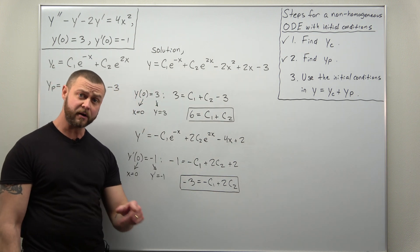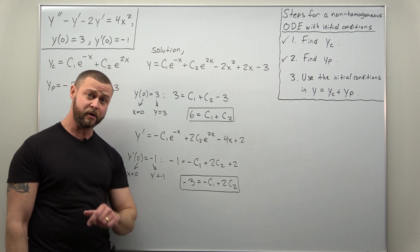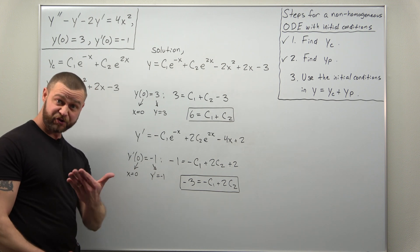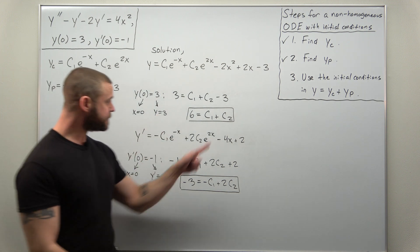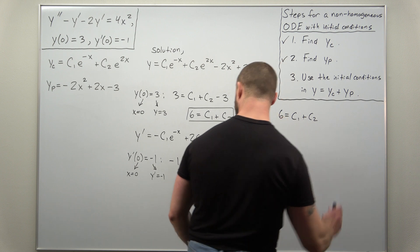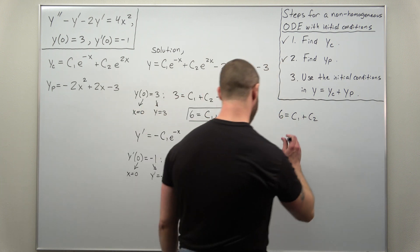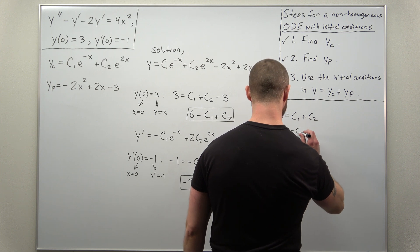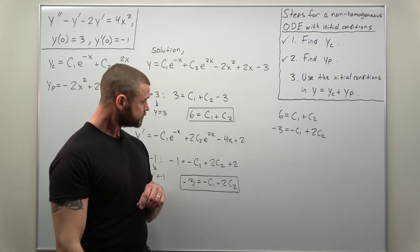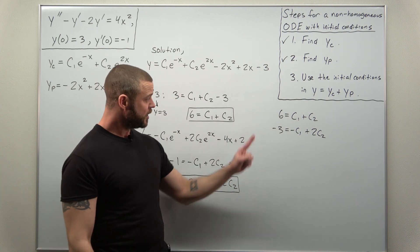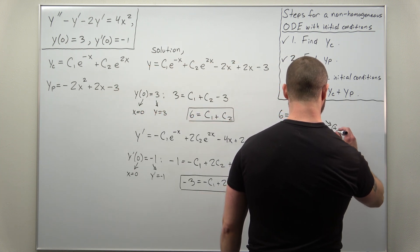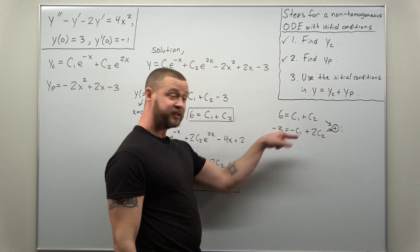This should be very straightforward from here. We've seen systems of two equations and two unknowns a lot. This should be like one of the things that you're hoping to get since it should be very straightforward for you. So I just like to stack my equations together. Six equals C1 plus C2. And I'll put the second equation right below. Negative three equals negative C1 plus 2C2. And it looks like here I can quickly solve this with elimination. If I add these equations together, I can get the C1s to cancel out. And it looks like I'm left with three.